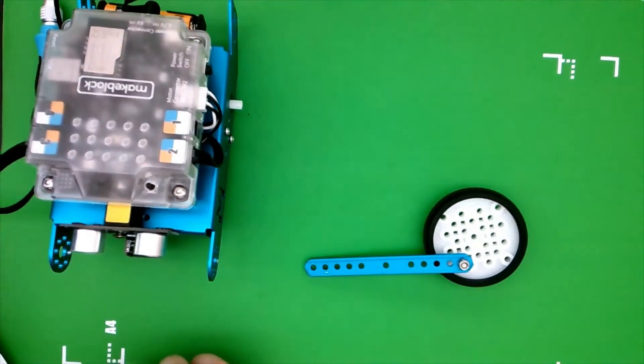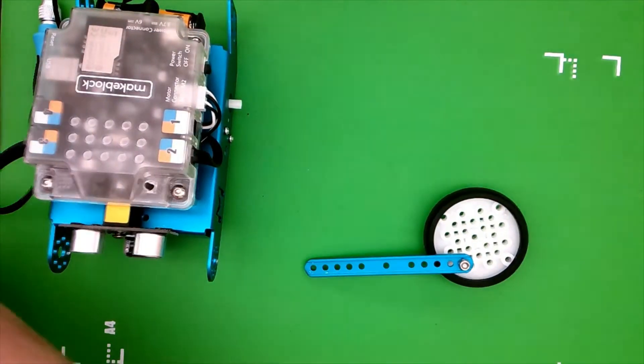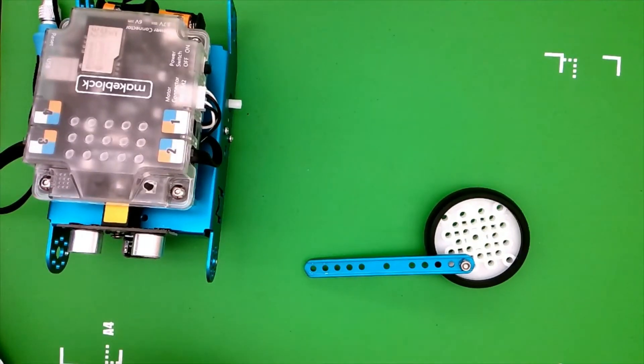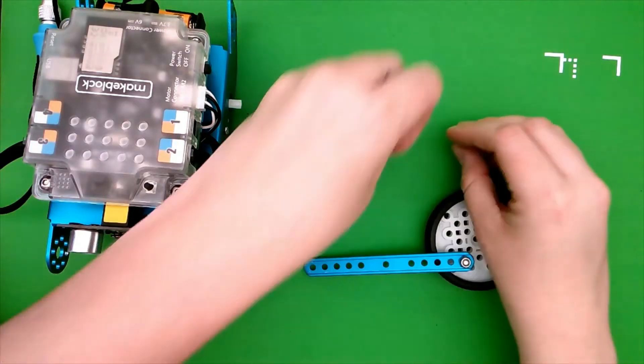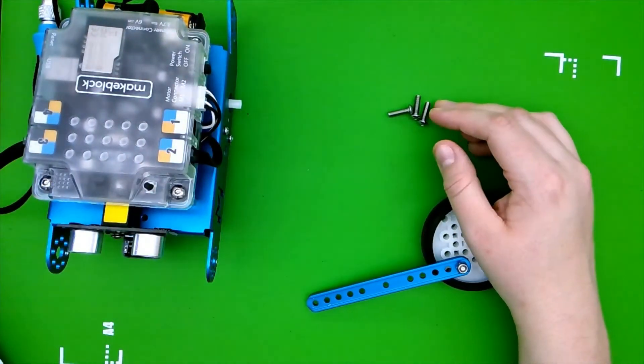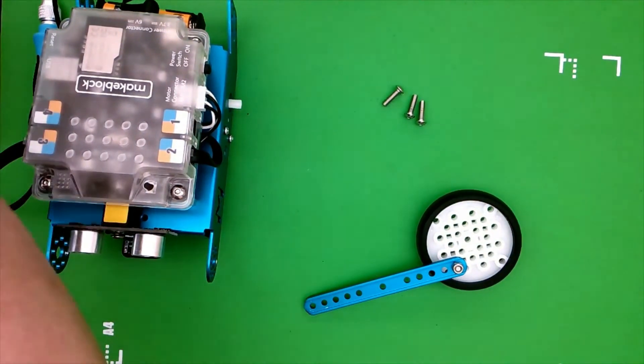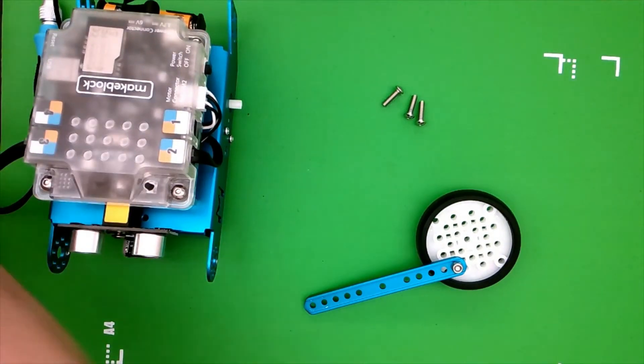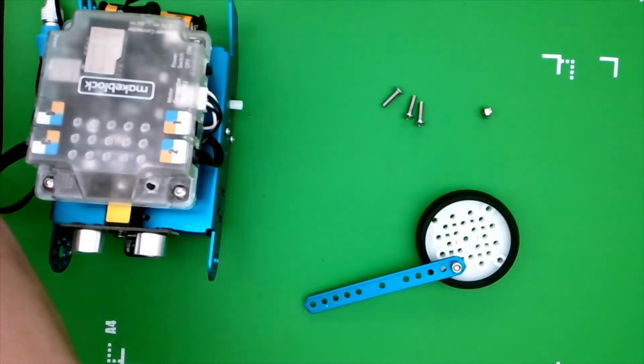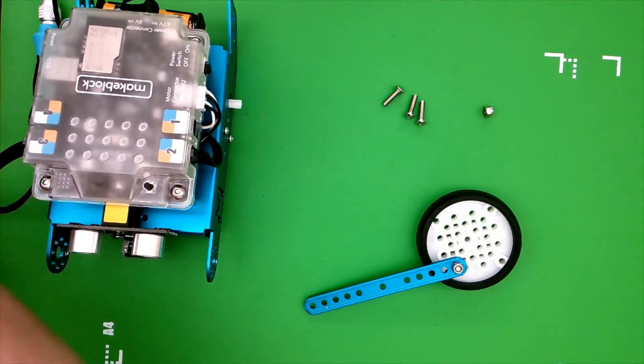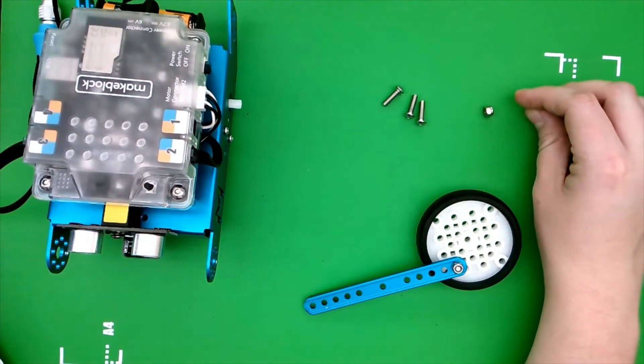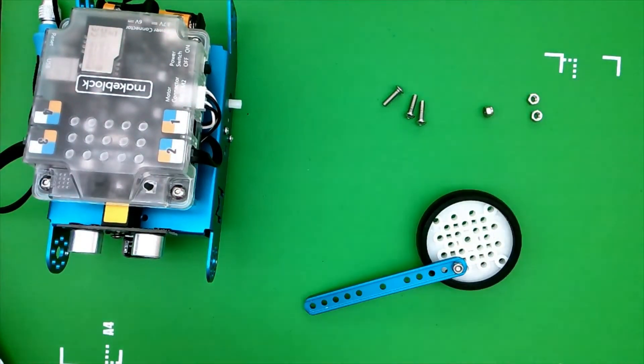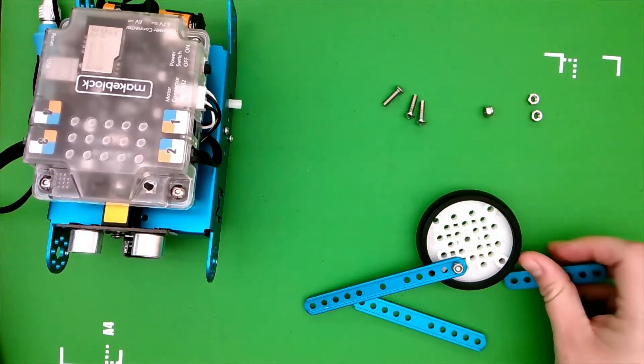Okay so next we're going to move on to step two. We're going to need three 14-millimeter screws, one lock nut and two regular nuts, and then we're going to need two blue beams. We need a 92 and a 60.